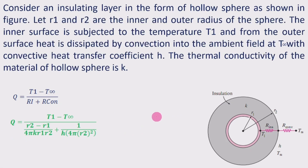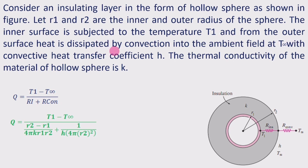Here we take the consideration for the sphere. Consider an insulating layer in the form of a hollow sphere as shown in the figure. Let R1 and R2 be the inner and outer radius of the sphere. The inner surface is subjected to the temperature T1, and from the outer surface heat is dissipated by convection into the ambient field at temperature T∞ with convective heat transfer coefficient H.